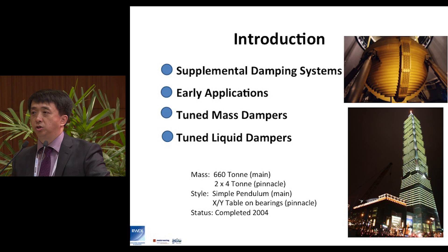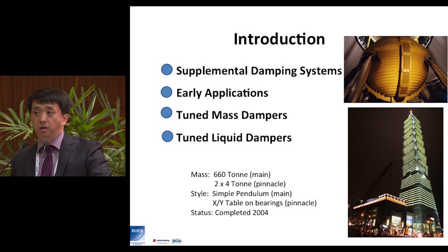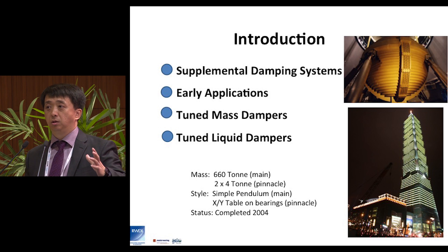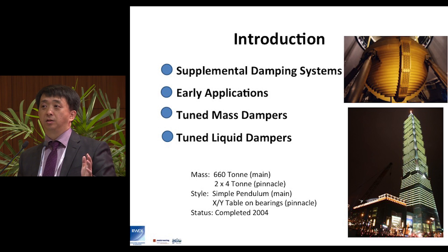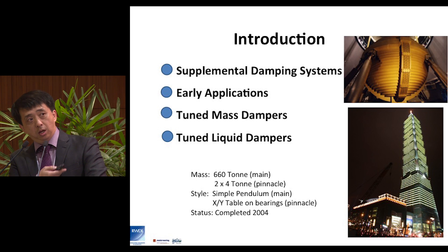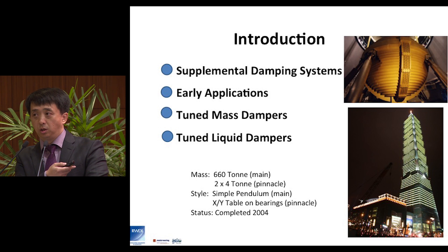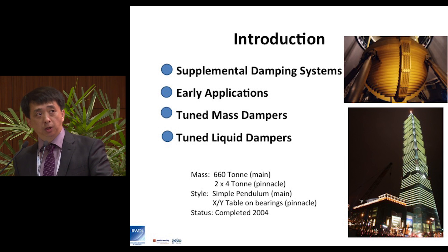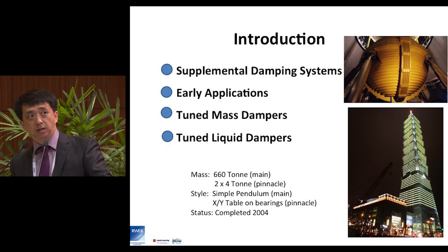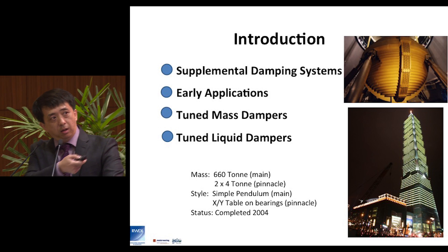A very famous example is Taipei 101 in Taipei. It is in an earthquake region where seismic load is high, so you try to keep the building light to reduce seismic load. At the same time, Taipei is a typhoon region so wind is also strong. The damper is used to control the wind, which gave the building the feasibility to be designed. The TMD on top of the tower also became an observation site that the public can visit.